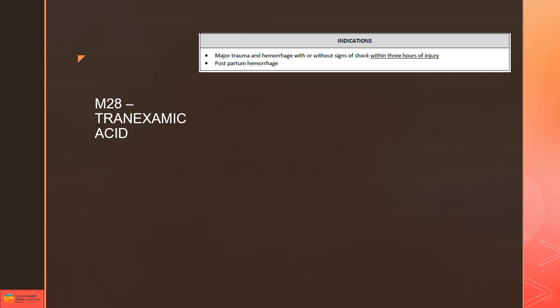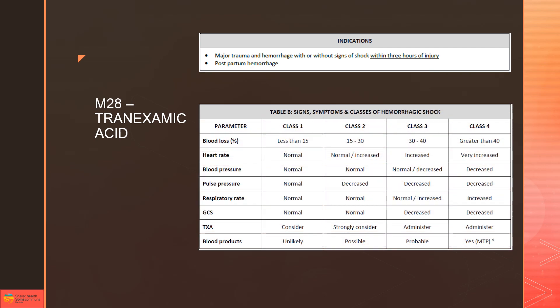Indications for using TXA is major trauma with or without signs of shock within three hours of injury. If you're wondering when we should be using TXA, in the CareMap F01 major trauma table B it shows signs, symptoms, and class of hemorrhagic shock, and gives you recommendations of patient situations where you would want to either consider or just go ahead and give TXA. If you're looking for a reference for when to give TXA, that would be the place to look.